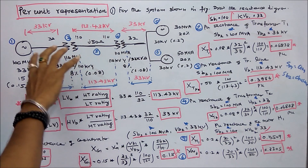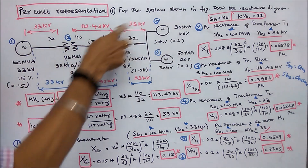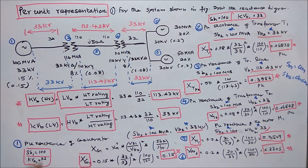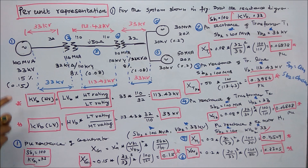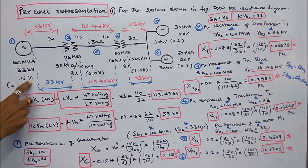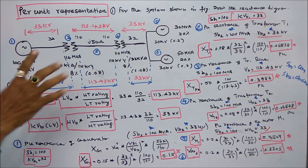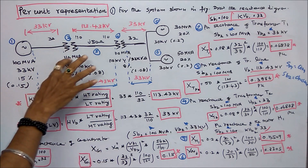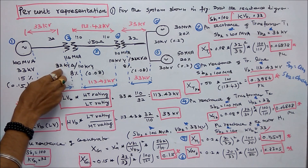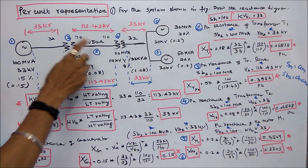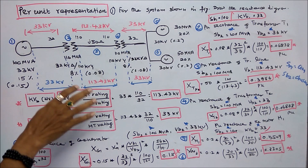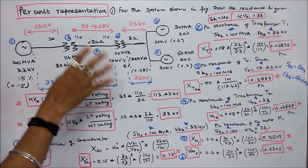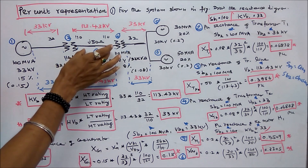The system consists of six components. One is a generator with rating 100 MVA, voltage rating 33 kV, and percentage reactance 15% or 0.15 per unit. The second is a transformer with rating 110 MVA, primary side 32 kV delta, secondary 110 kV star, and leakage reactance 8% or 0.08 per unit.